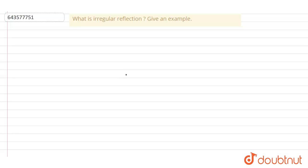So, irregular reflection: when a beam of light falls on a rough or unpolished surface such as wood or paper, the light reflected is in different directions. Such type of reflection of light from an uneven surface is called irregular reflection.